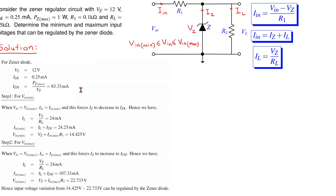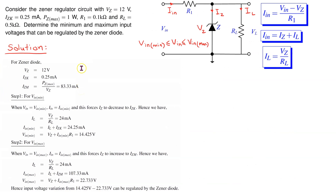A slide shows a solution to a numerical problem for finding the minimum and maximum input voltages that can be regulated by the Zener diode. Please pause the video if you wish to study the solution in more detail.